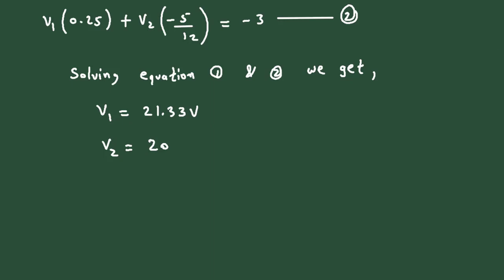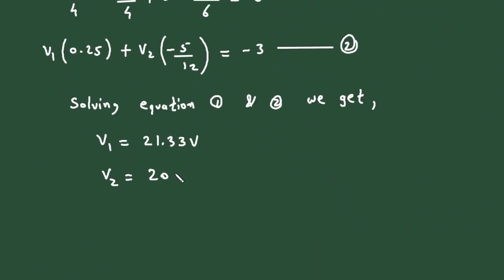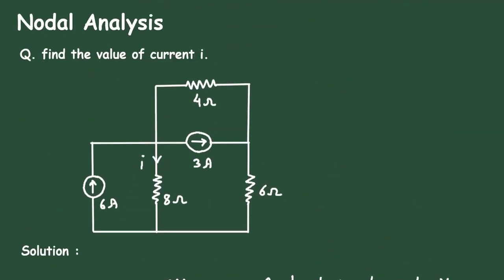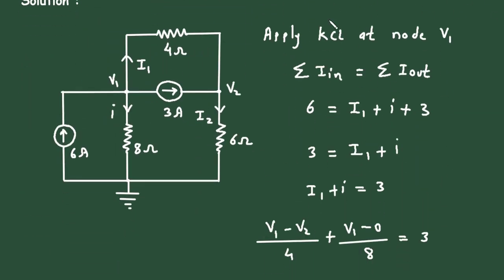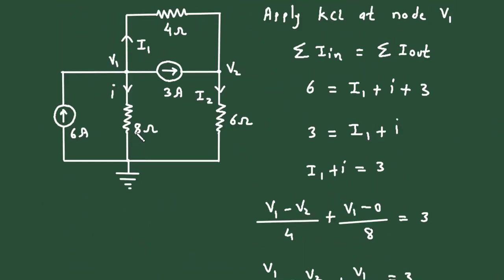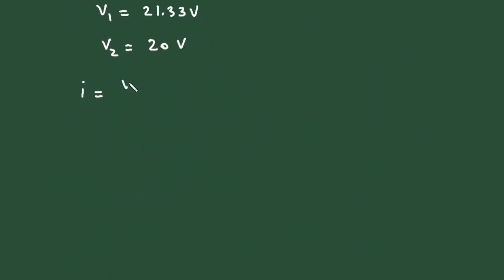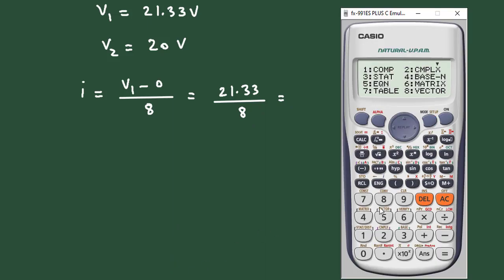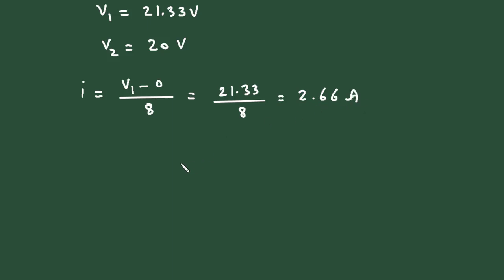Now we have the values of V1 and V2. What we have to find is the value of current I. I equals V1 minus 0 divided by 8. With V1 equal to 21.33, it is 21.33 divided by 8, which gives 2.66 ampere. So the value of current I is 2.66 ampere.